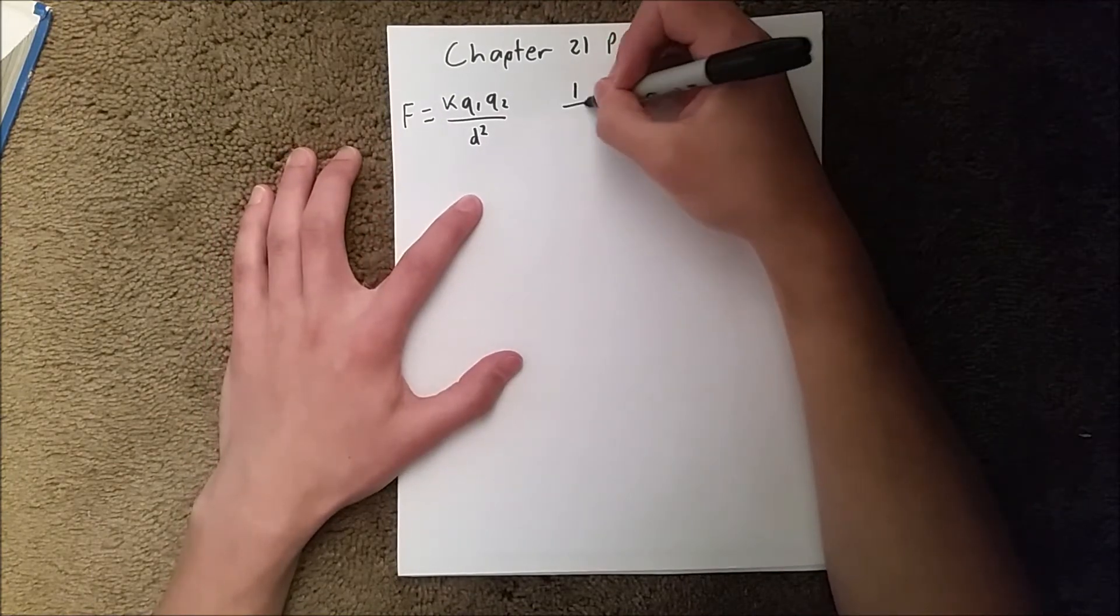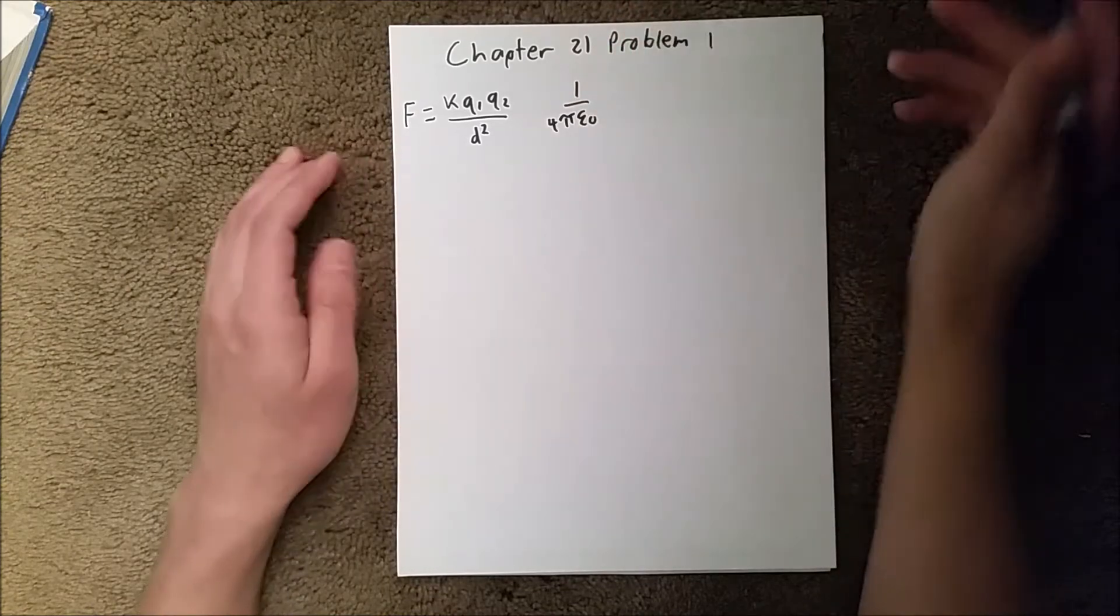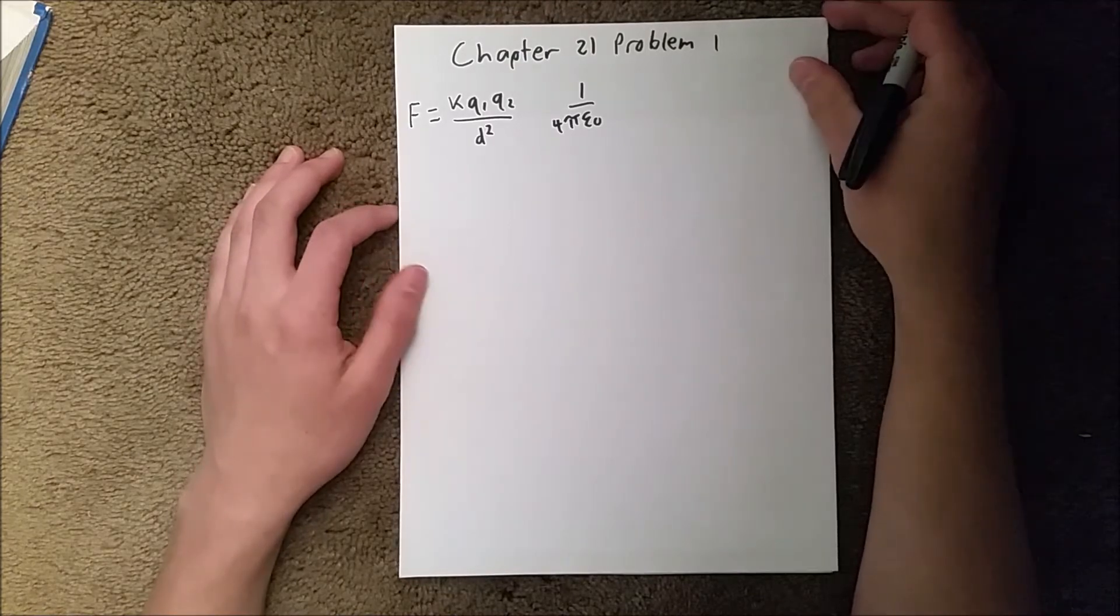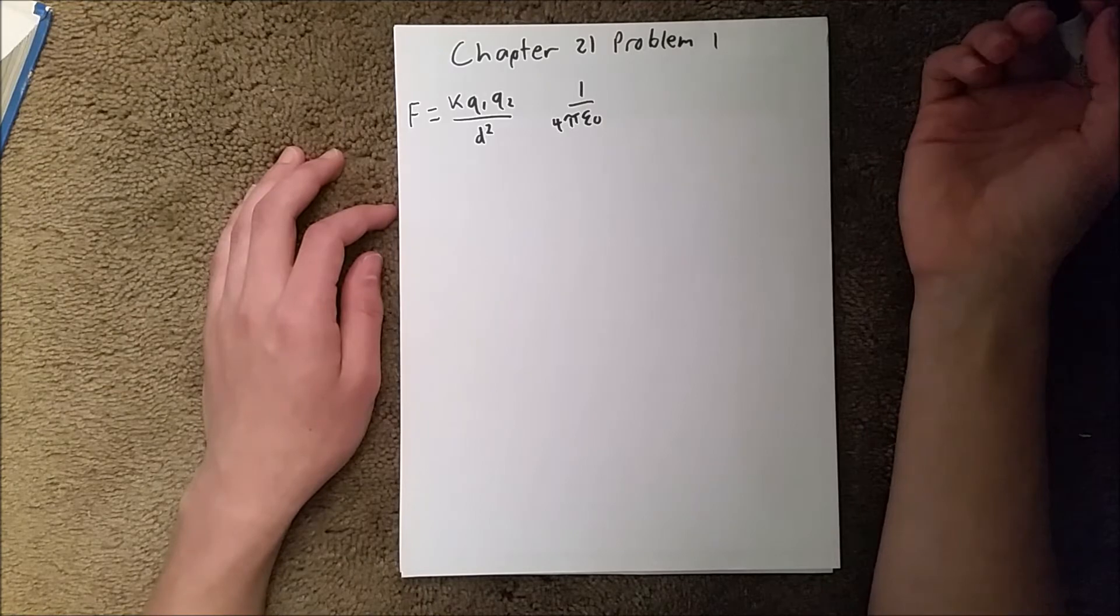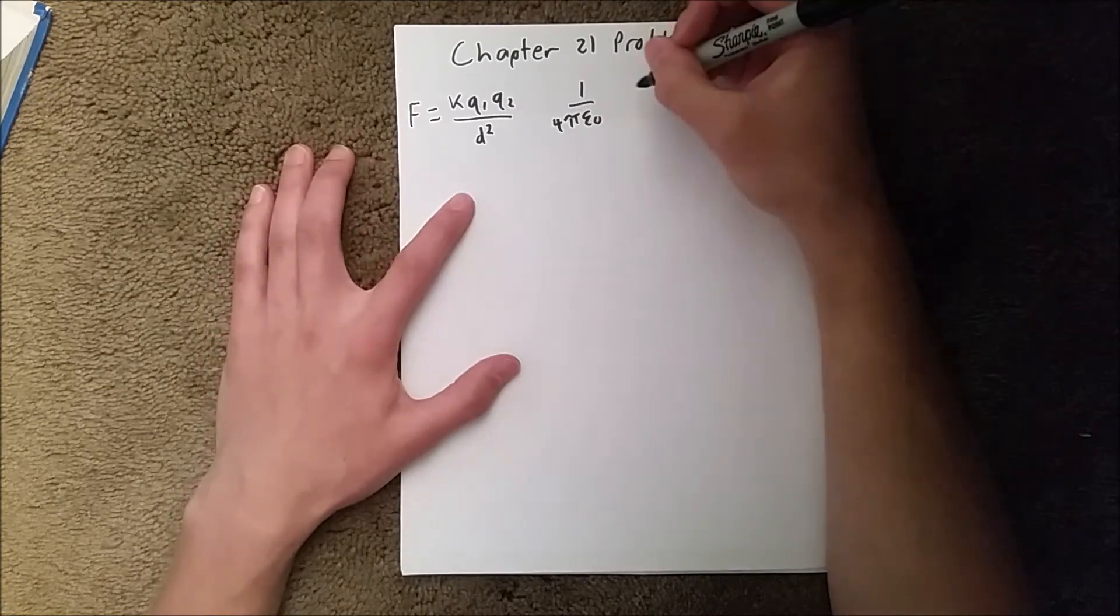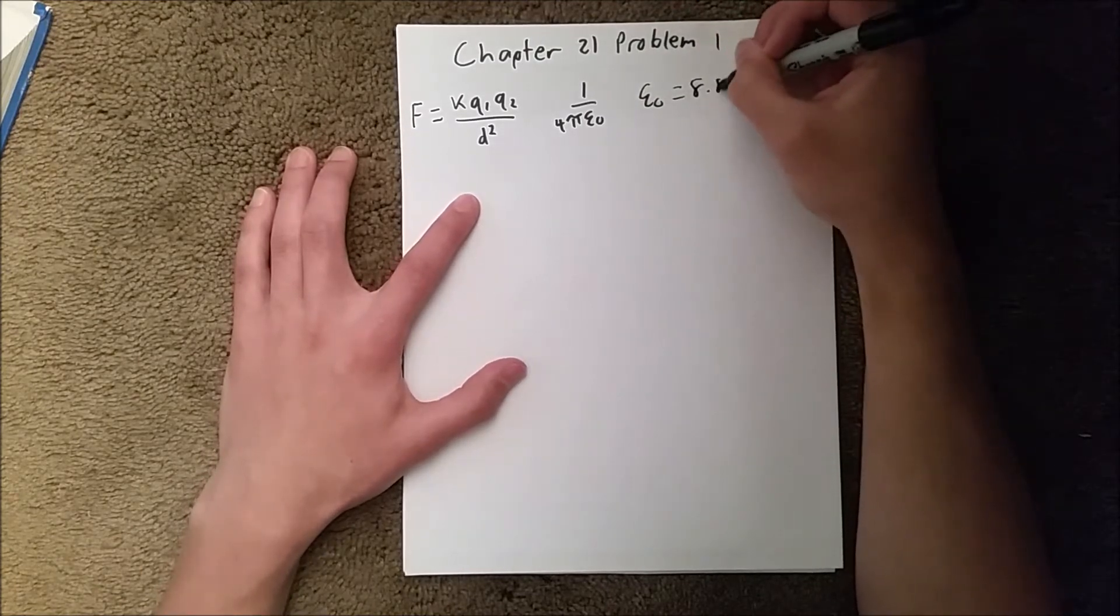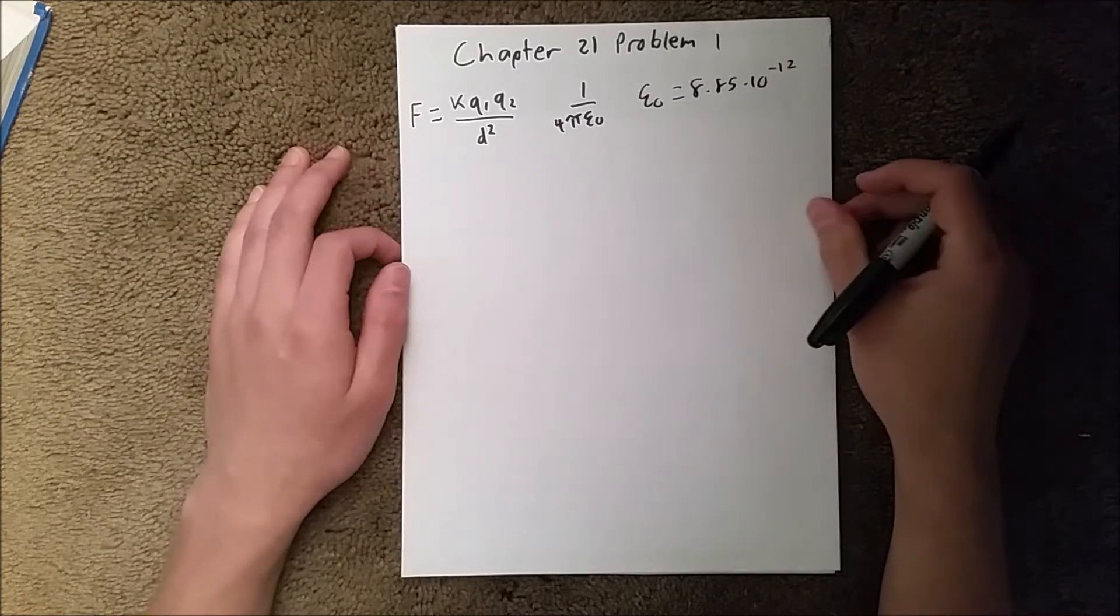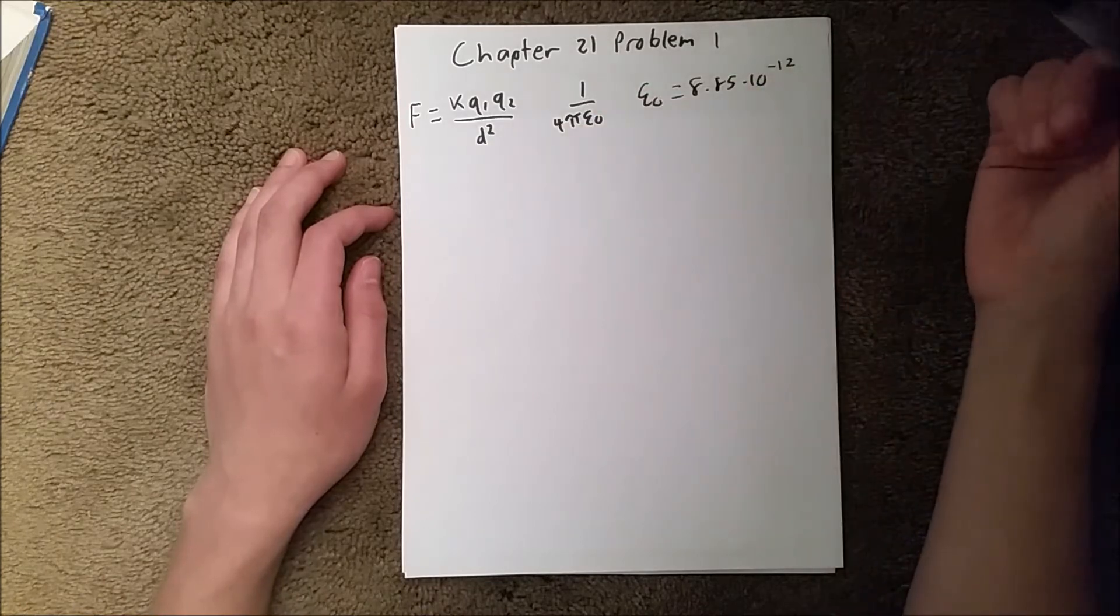K is normally 1 over 4 pi epsilon sub 0. But we can just write it as K because it's simpler, and 1 over 4 pi times epsilon 0 is actually a constant because pi we know is 3.14 and epsilon sub 0 is like 8.85 times 10 to the negative 12th. So that right there is just a constant we can write as K.